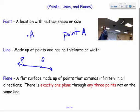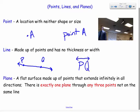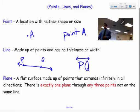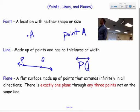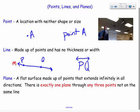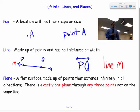When I name this line, I write PQ with a line (with both arrows) on top, so I know I'm talking about a line and not a segment or ray — we'll get into those later. Also, if there's a lowercase letter at the end of the line, for example a lowercase M, I could also call this line M.